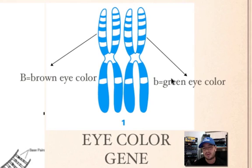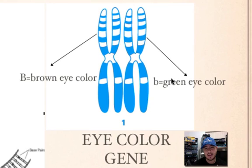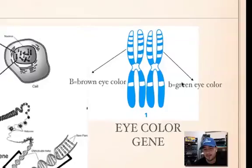Here's another example. What if I said face shape? Face shape would be the gene; the alleles would be round face and square face. Or skin color — maybe the alleles would be light, tan, or dark. There you go, three alleles. So just get the difference between those.